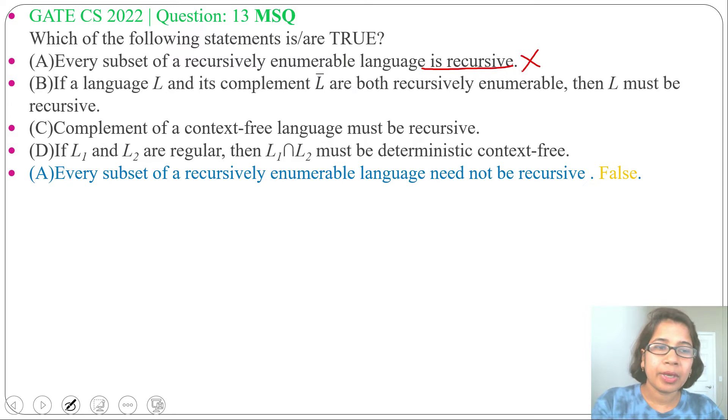Now, second statement: if a language L and its complement L̄ are both recursively enumerable, then L must be recursive. Recursive languages are closed under complementation, while recursively enumerable languages are not closed under complementation.